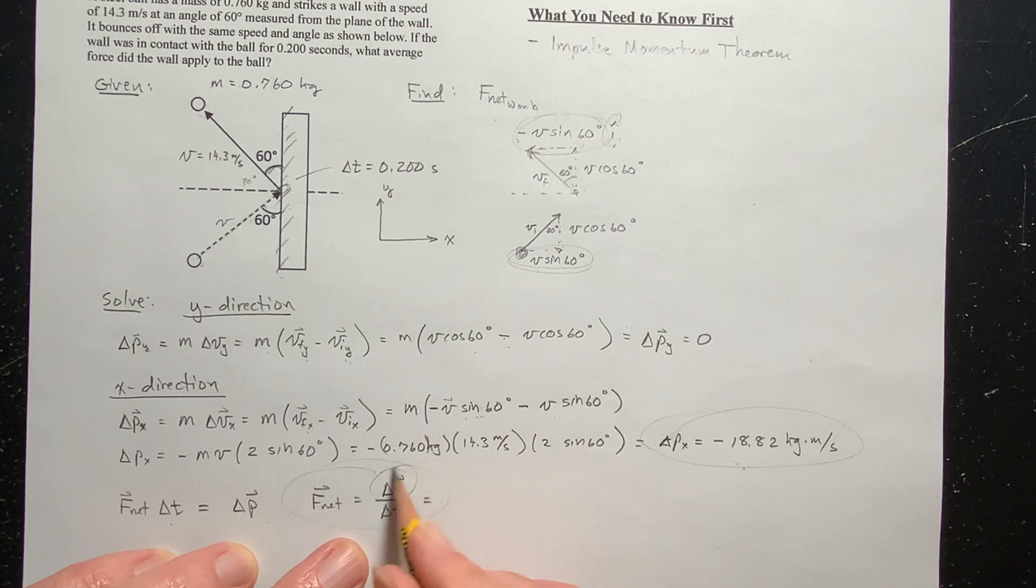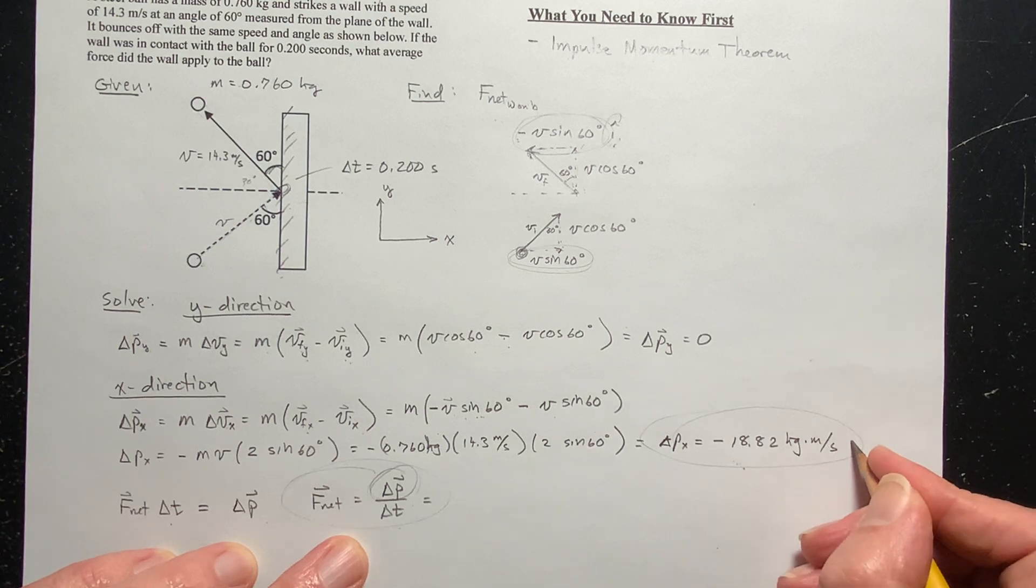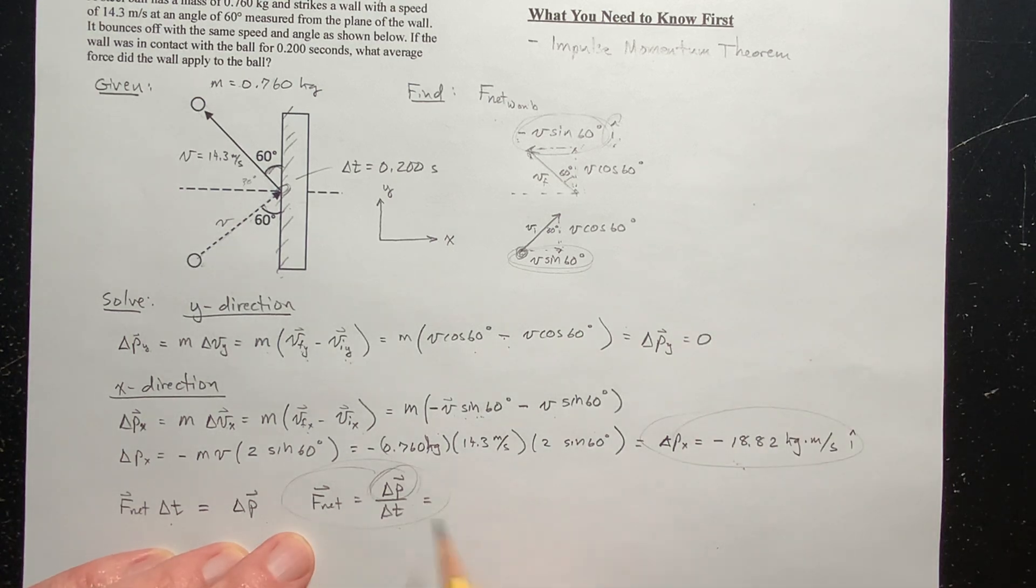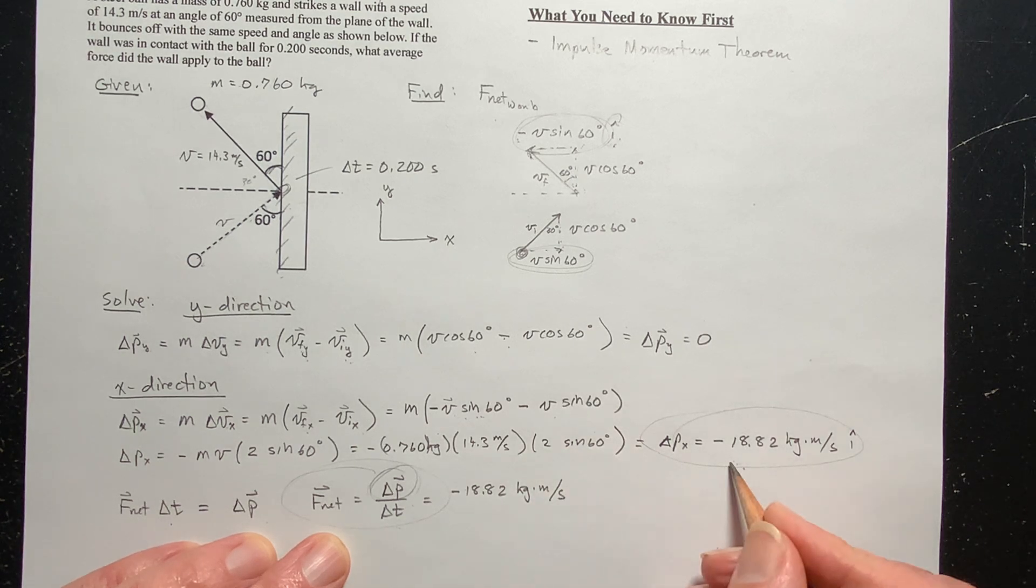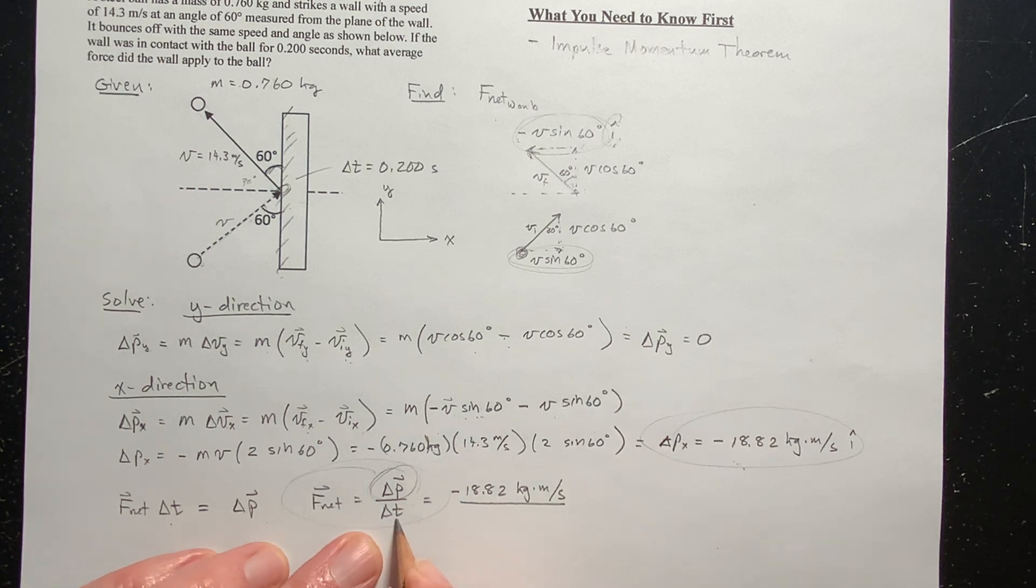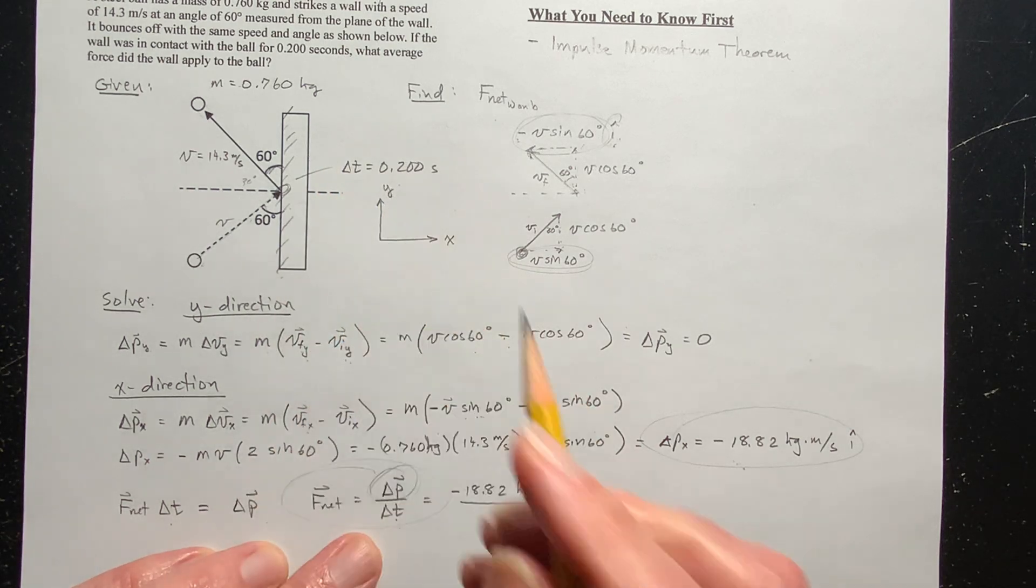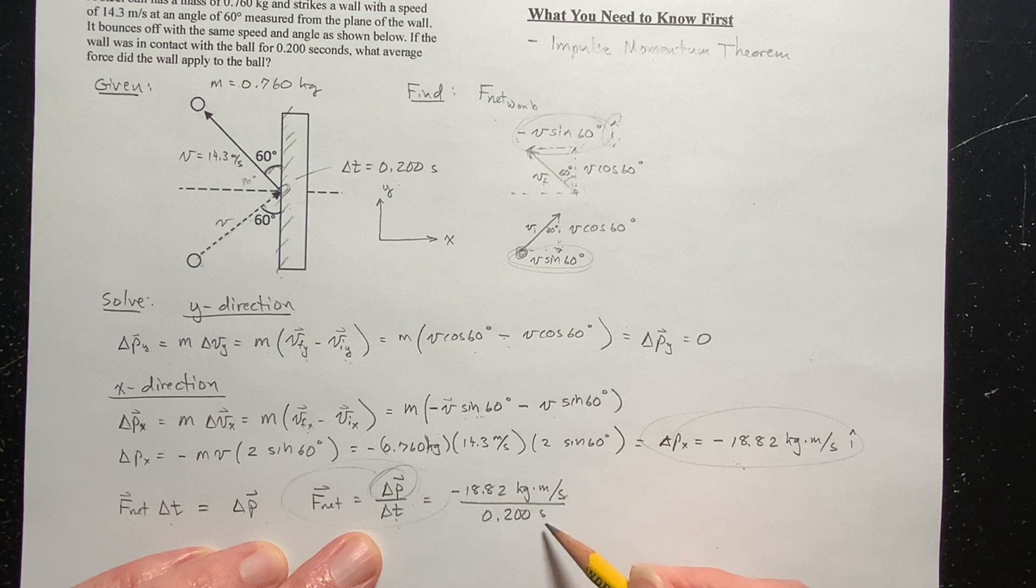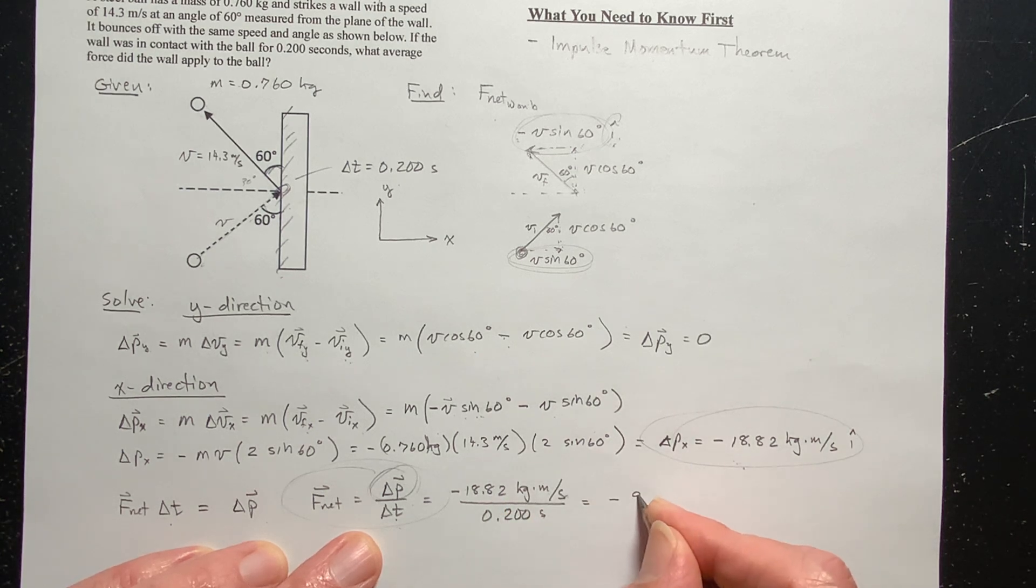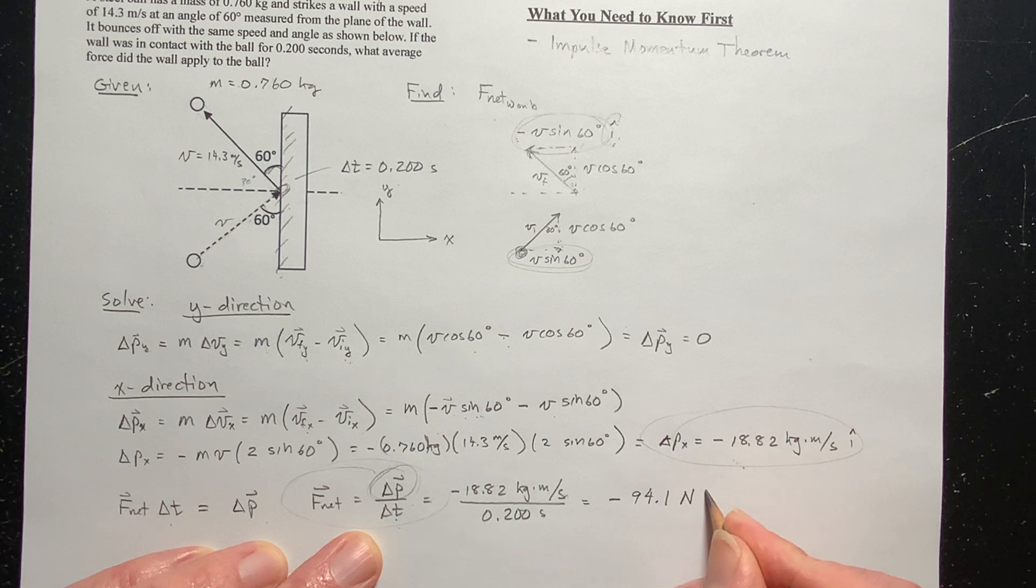Okay, so, well, we know what the change in momentum is. It's this, and it's in the x direction. Nothing in the y. Everything's, this force is going to be in the x direction. So this is negative 18.82 kilogram meters per second. Those are the units for change in momentum. Divided by time. And the time was given to be 0.2 seconds. So that's going to be 0.200 seconds. So you have kilogram meters per second times second and second squared, and that's a Newton. Kilogram meter per second squared is a Newton, so that the units work out. And when you do the arithmetic here, you get negative 94.1 Newtons of force in the negative x direction.